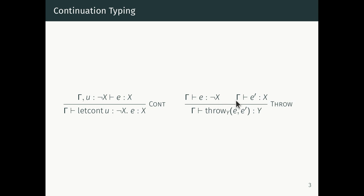If we have a not-X and we ever find an X, we can throw e-prime to the continuation e and get a Y of some arbitrary type. Operationally, when we throw e-prime to e, we're doing a jump — throw is never going to return, so we can give it any type we like. The let/cc operation is taking your program stack and capturing it, just as with the continuation machine where we had a value and a continuation, and whenever we did a reduction we would push something onto the continuation stack.